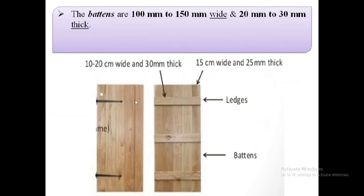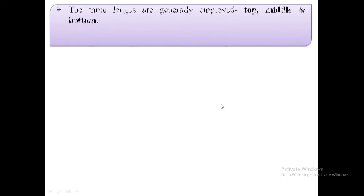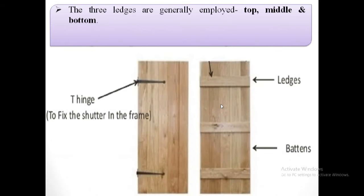The vertical boards known as battens are 100 mm to 150 mm wide and 20 mm to 30 mm thick. The horizontal supports known as ledges are generally 100 mm to 200 mm wide and 30 mm thick. Three ledges are generally employed: the top ledge, middle ledge, and bottom ledge.